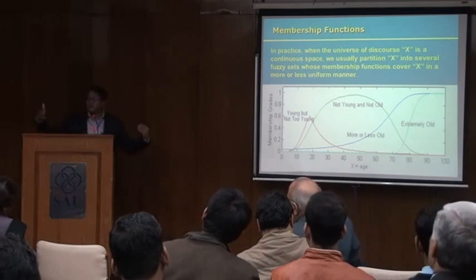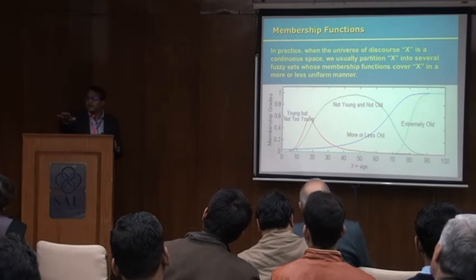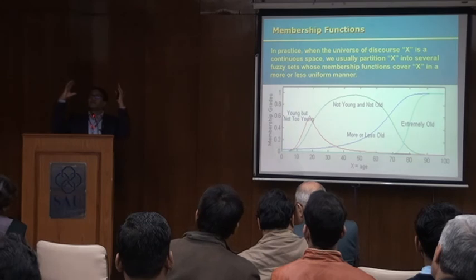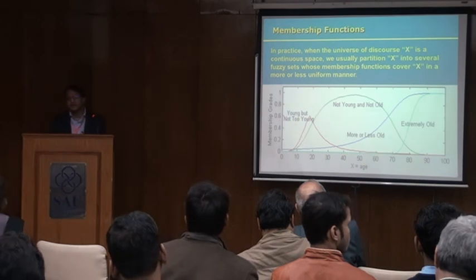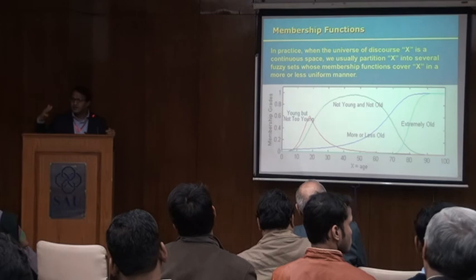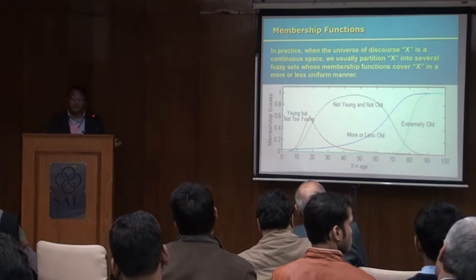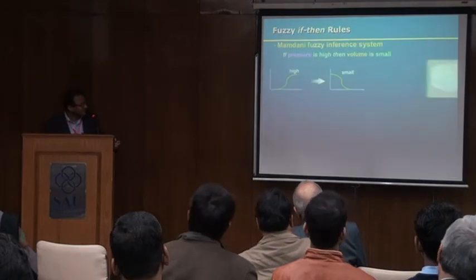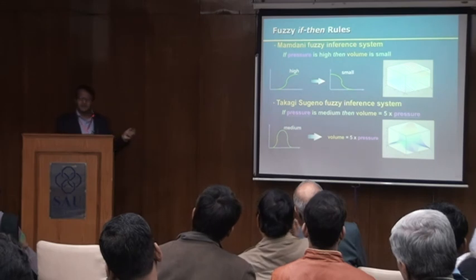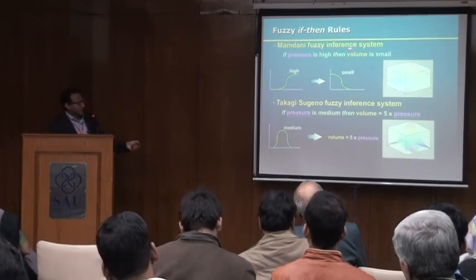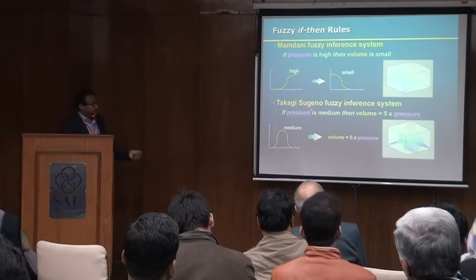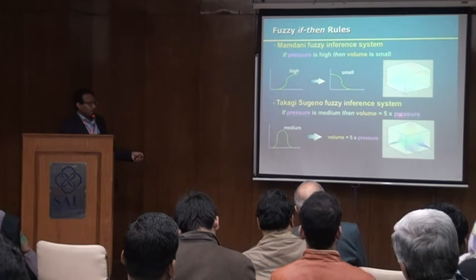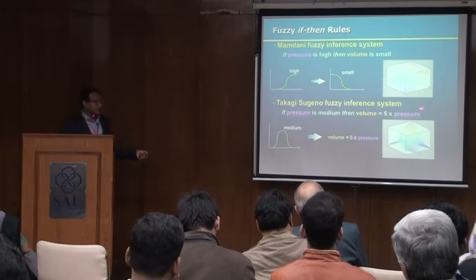We always relate things to context. A fuzzy inference system provides a very nice way to model this type of uncertain environment. There are various fuzzy inference methods. One type of system says: if the pressure side volume is small, you can see both inputs and outputs are fuzzy sets. Another type of system — like the Takagi-Sugeno type — says five times pressure, and you can see the output is actually a linear combination of the inputs.